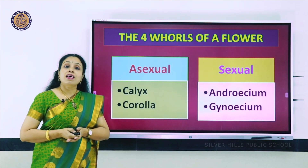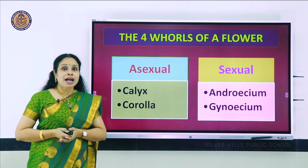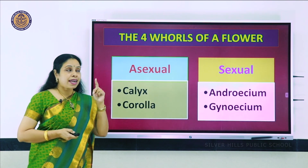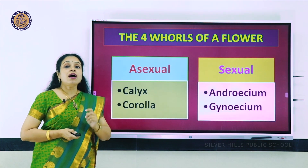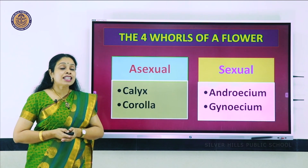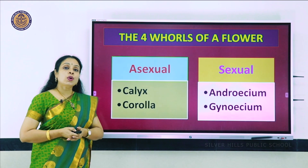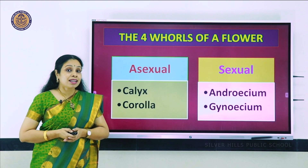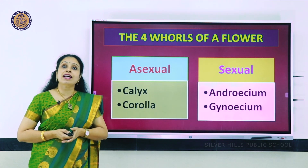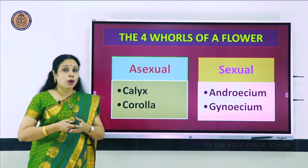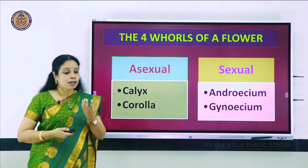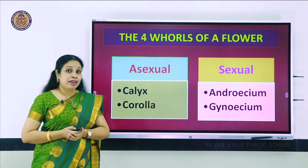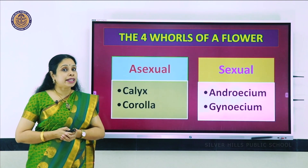We start off with the parts of a flower. A normal bisexual flower will have four whorls. Two of those whorls are asexual and two are the sexual whorls. The asexual whorls are calyx and corolla. Calyx refers to the group of sepals - the green sepals which protected the flower as a bud and later support the basal part. The corolla is generally bright in color to attract pollinators.